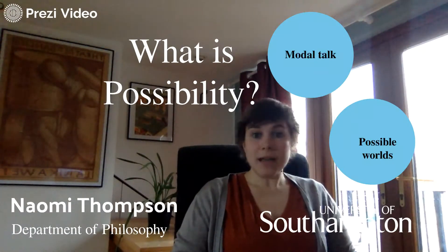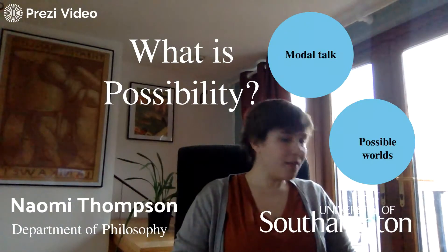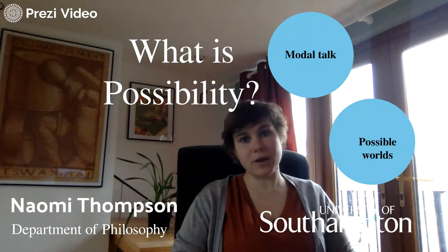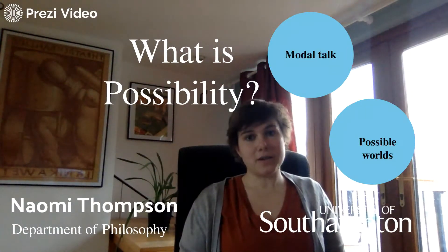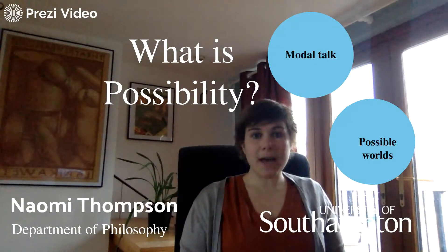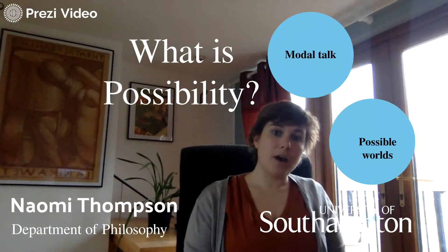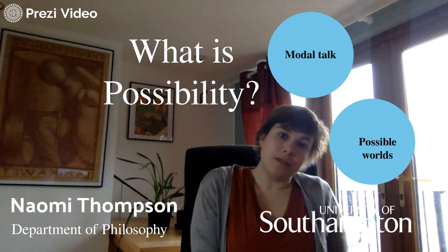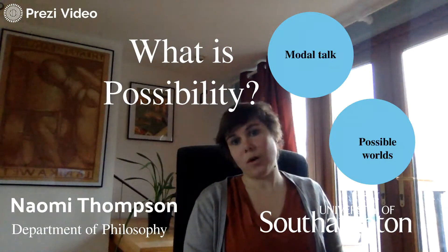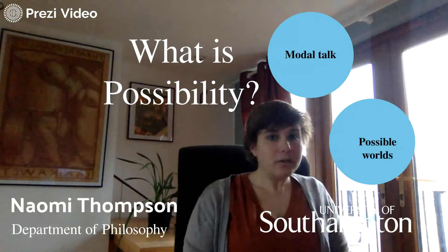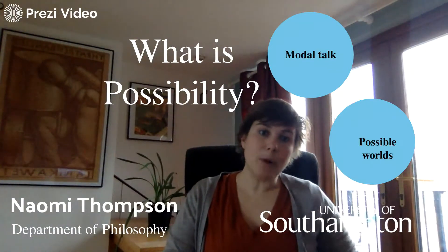It's not enough to see that a sentence is necessarily true just to see that it's true. If we find that 'Naomi is a philosophy lecturer' is true in this world, that doesn't tell us anything about whether Naomi had to be a philosophy lecturer. Sentences about the way the world is aren't sufficient to tell us whether sentences about what has to be or what might have been are true or false. So what do we do? Well, philosophers appeal to the device of talking in terms of possible worlds.